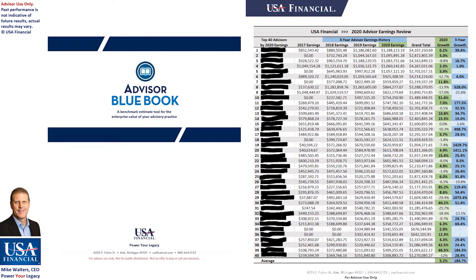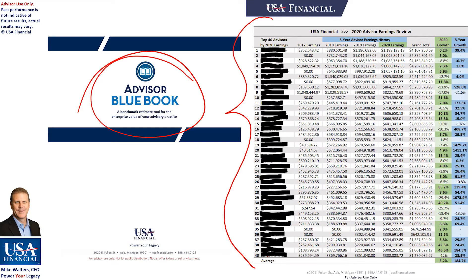You're going to want to get a copy of the Advisor Blue Book if you don't have one — just contact us. This is what's gotten a lot of attention as of late. We discussed this briefly on a webinar not long ago, focused on what went on in the year 2020. This is a list of the top 40 advisors earning revenue with USA Financial during the course of 2020.